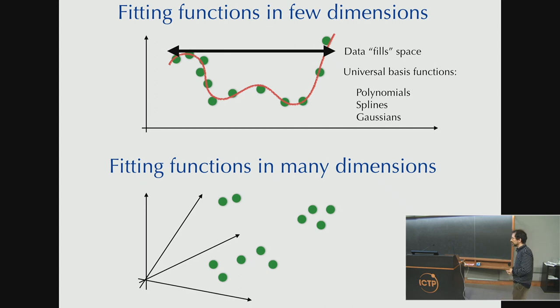To get the short-range part of quantum mechanics accurately, we will want to fit functions of, say, the energy of an atom as a function of its 20 nearest neighbors. And that's a 60-dimensional space. So it's very large. So in high dimensions, you get data, but the data doesn't fill the space. It's very sparse.